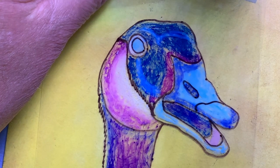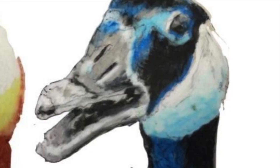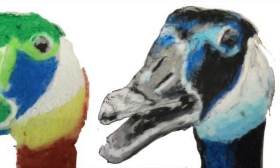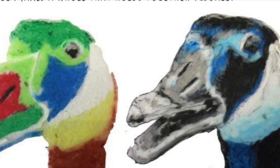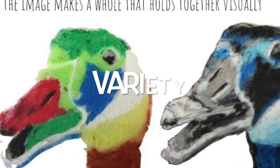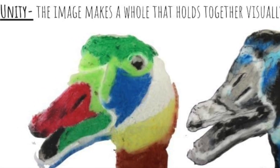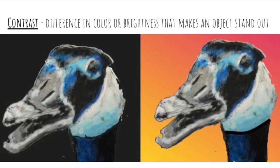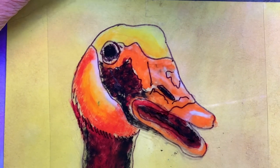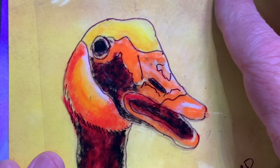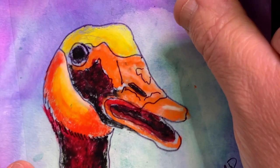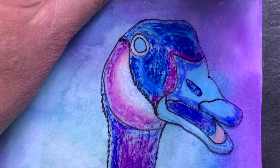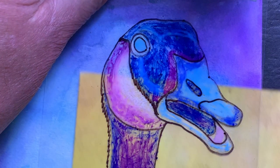Purple sometimes symbolizes royalty or people of wealth. One principle in art is the idea of unity — when you pick colors from the same color family, it will look cohesive, like it all goes together. If you pick a lot of different colors from different color families, you get the principle known as variety, which can provide visual interest but can also look like the colors don't really work well together. Another principle in art is contrast. This orange goose against a yellow background sort of blends in, but place the same goose against a purple background and it really pops off the page. Similarly, a blue goose against a blue background doesn't really stand out, but against a yellow background it does. Choose your colors carefully.